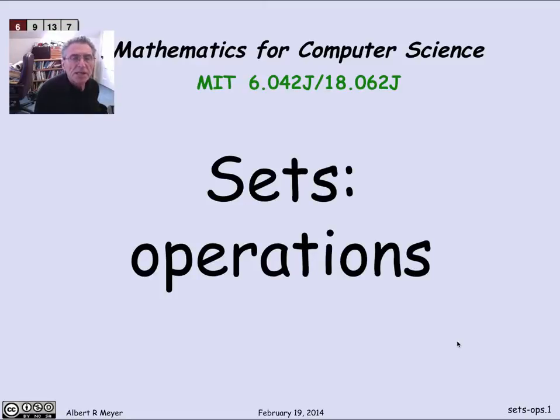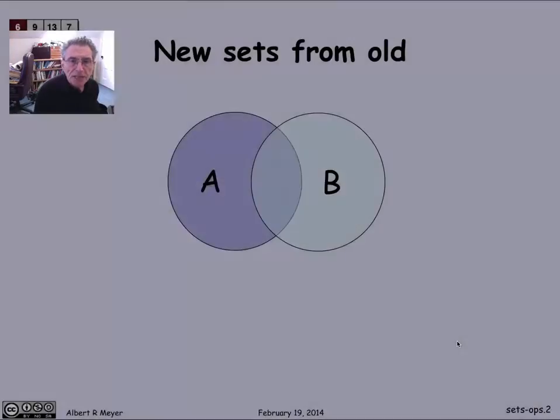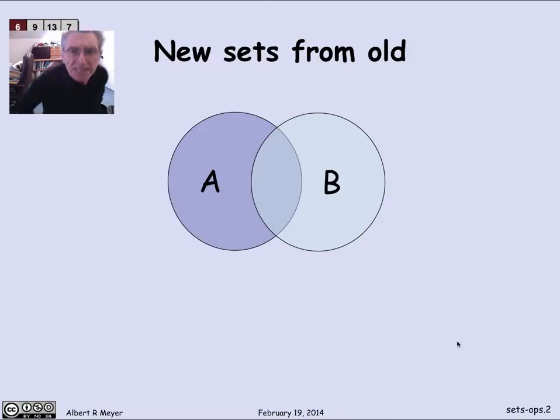Let's define a few familiar and standard operations on sets. So here's a picture of two sets A and B, where the circle represents the points in A. The other circle represents the points in B.